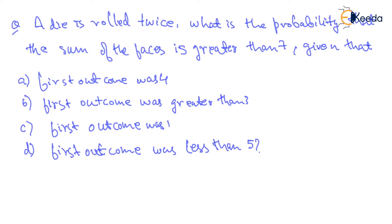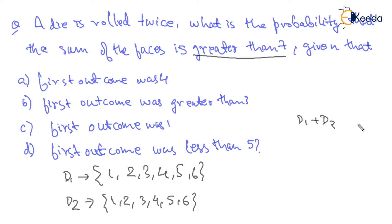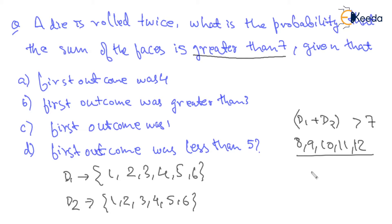So, there are two dice, or you can say there is a die which is rolled twice — it's all the same. When you roll it once, you can expect 1, 2, 3, 4, 5 and 6, and again rolling it a second time you can get 1, 2, 3, 4, 5, 6. So these are all the possibilities which have to be considered.